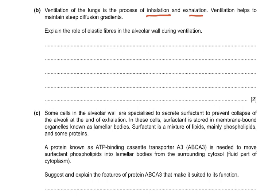Ventilation of the lungs is a process of inhalation and exhalation, and it helps to maintain a steep diffusion gradient. Explain the role of elastic fibers in the alveolar wall during ventilation. Elastic fibers allow the alveoli to stretch on inhalation, prevent the alveoli from overstretching or bursting, and when they recoil during exhalation they help in forcing the air out.